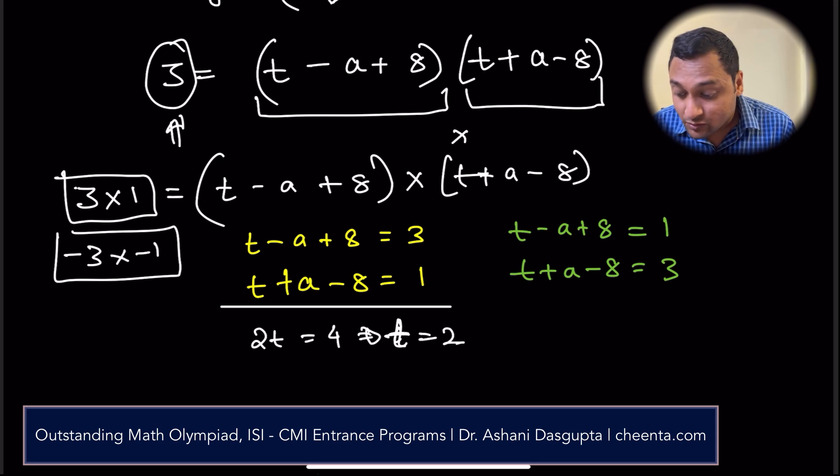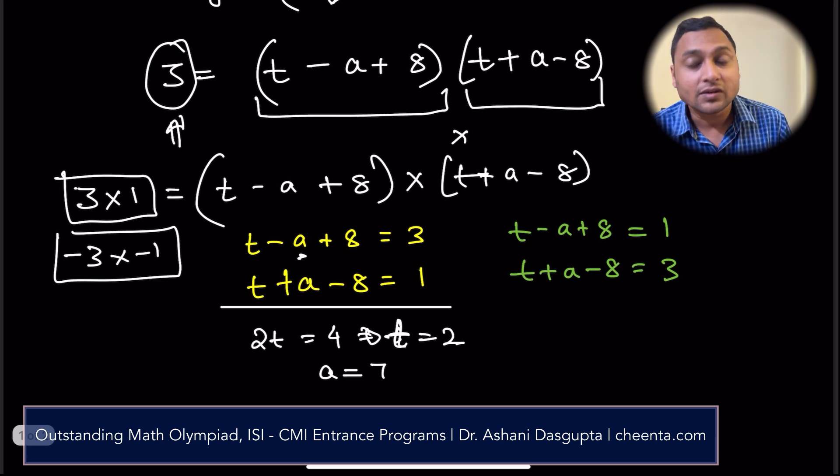If I have t equals to 2, then I can find out the value of a. a equals to 7. t equals to 2 means a equals to 7.